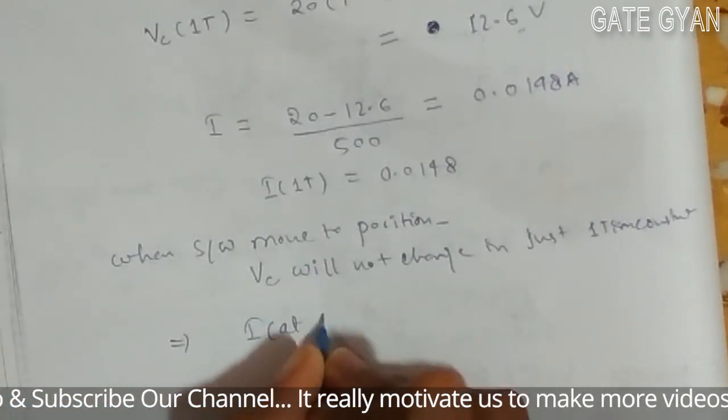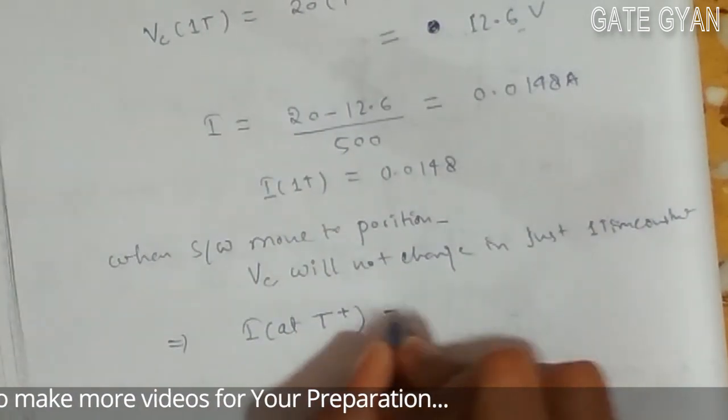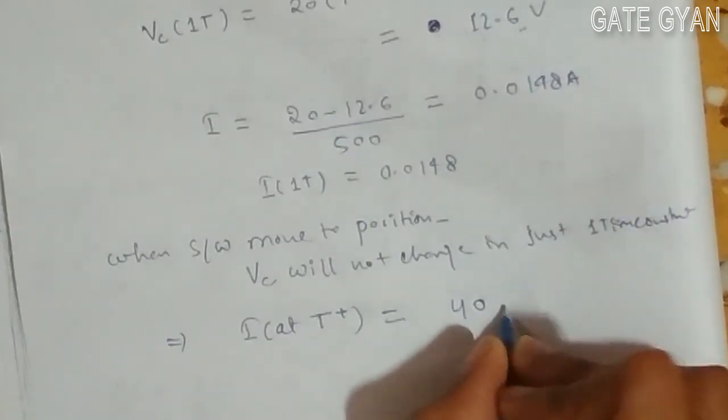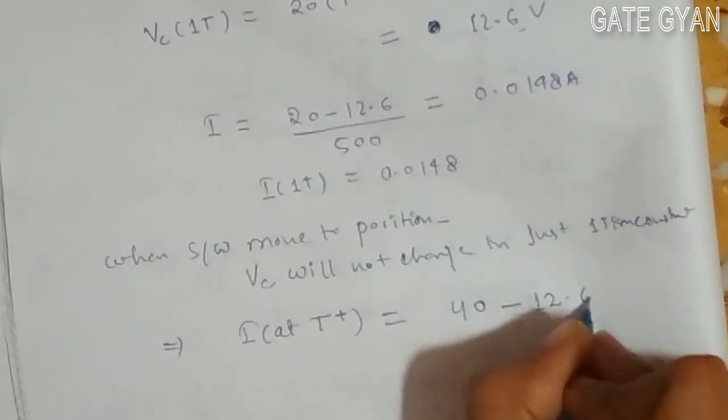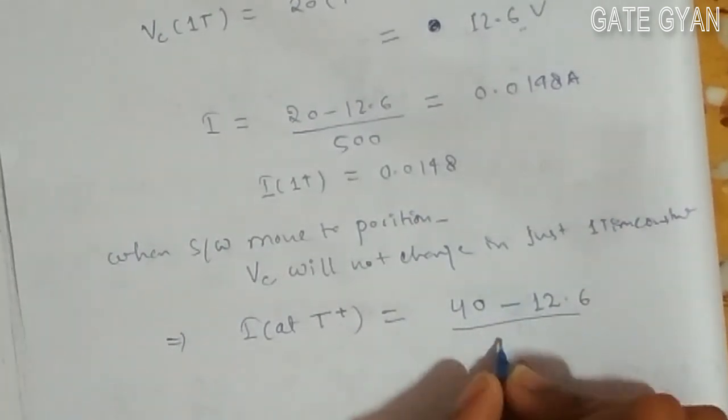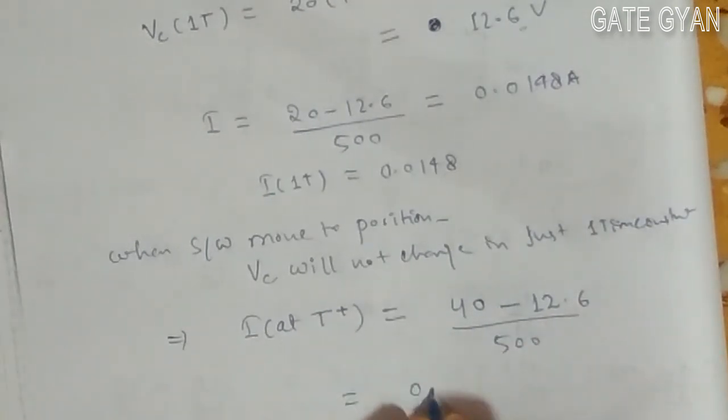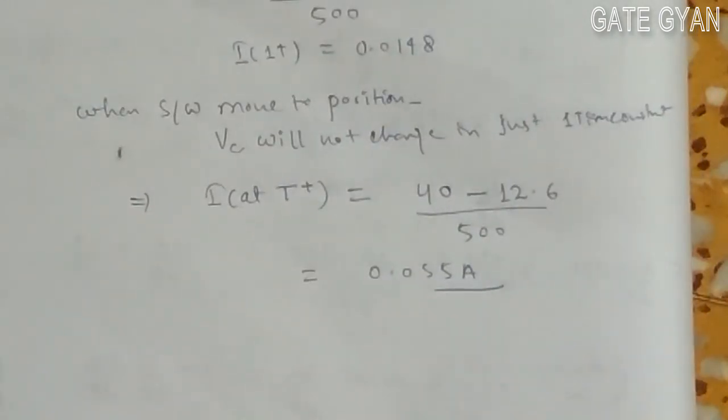So i at tau plus, that is after 1 time constant, will be given by, now it is connected to 40 volt. My current will become 40 minus 12.6 divided by 500. From here I will get 0.0255 Ampere. This is my answer.